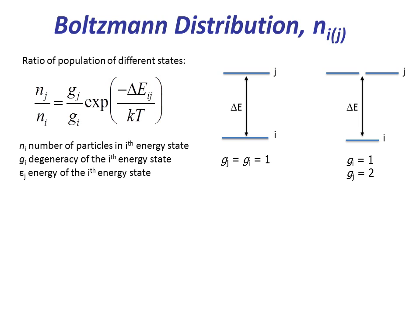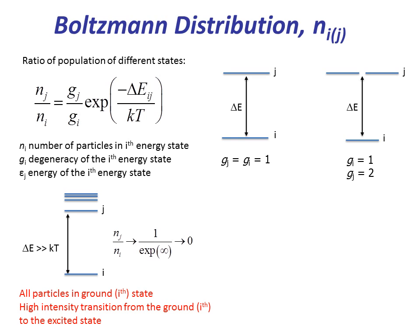Let's understand it in terms of the equation above. Here I have depicted an energy level diagram where delta E is much greater than kT. If we use the equation above, we will see that the ratio tends towards zero, which means that all the particles are in the ground state, and high intensity transition is expected from the ground state.